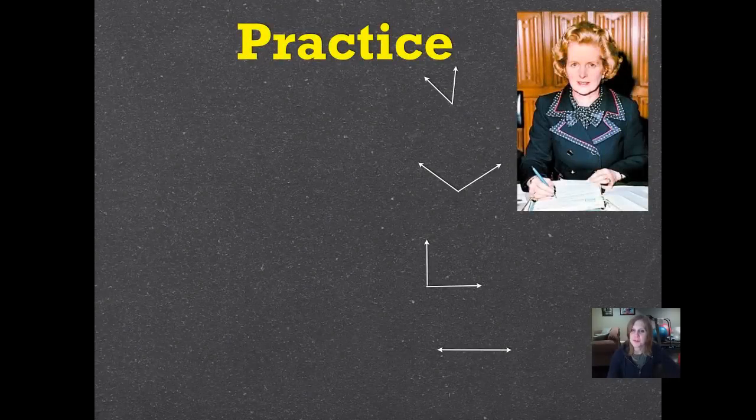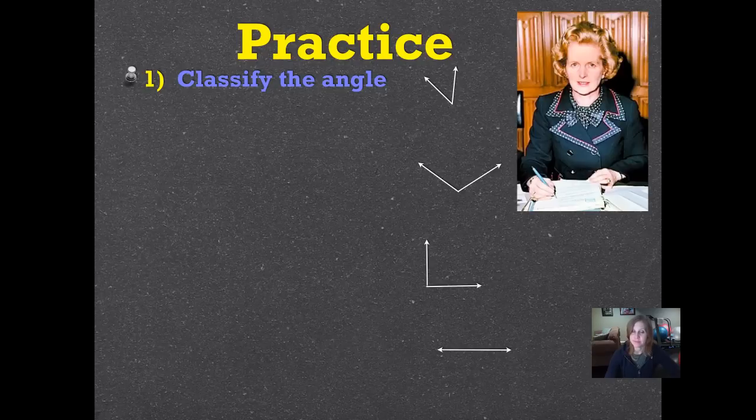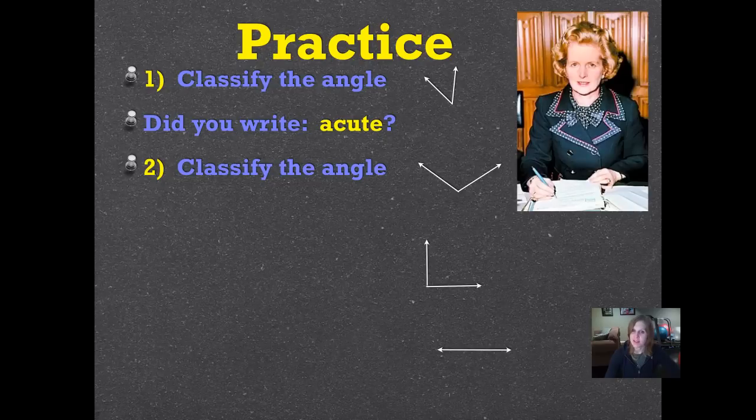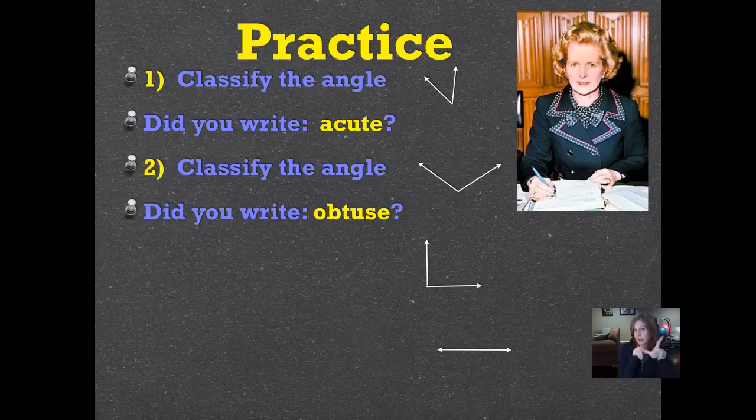It's time for us to do some practice. We're going to classify some angles. Number one, classify the angle that's next to the word angle, and pause it and push play when you've written it down. Did you write acute? That's a cute little angle. It's less than 90 degrees. Let's try another one. Classify the angle. Did you write obtuse? Obtuse open. It's opened greater, wider than a 90 degree angle.